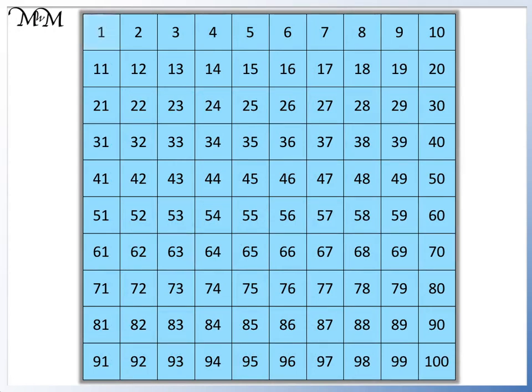We have 1, 2, 3, 4, 5, 6, 7, 8, 9. We can count on 9 more: 1, 2, 3, 4, 5, 6, 7, 8, 9.